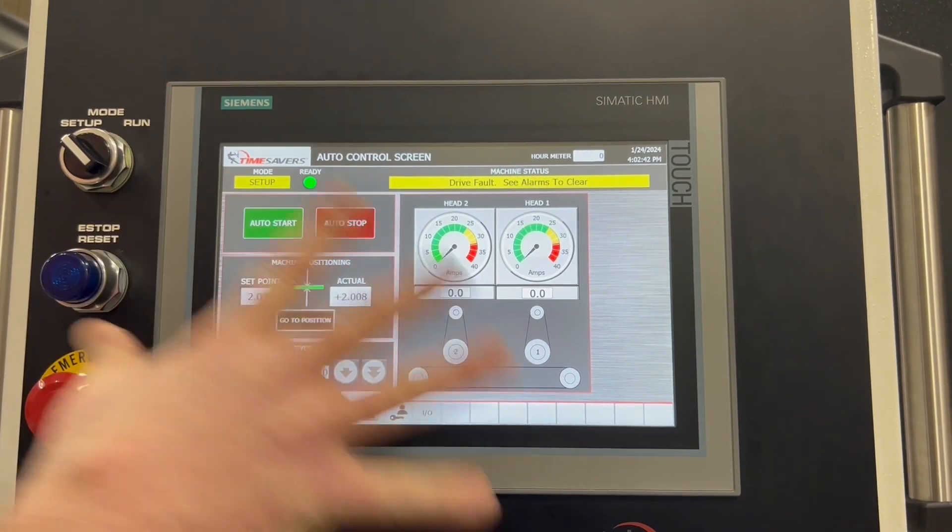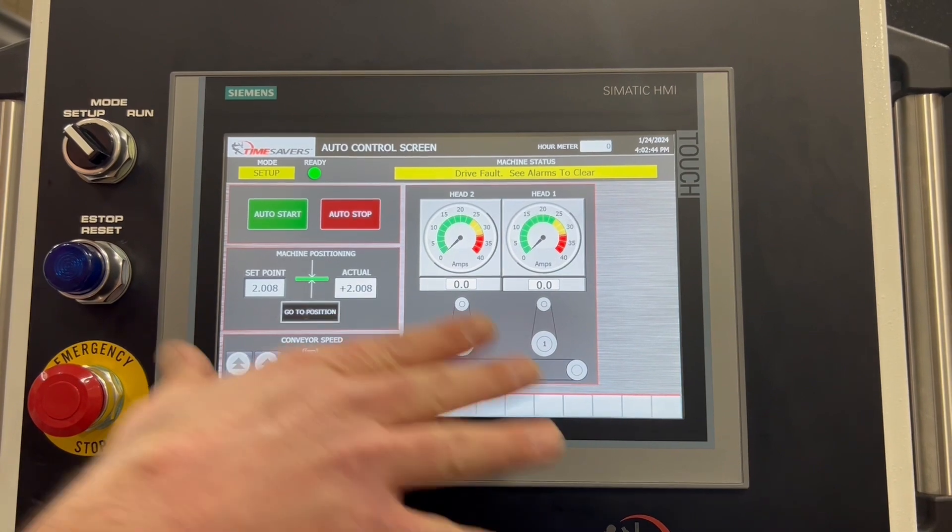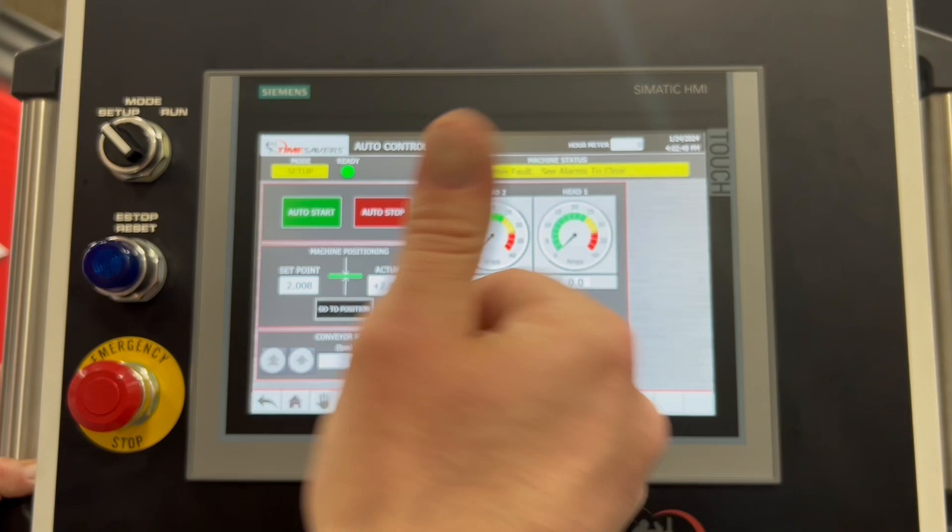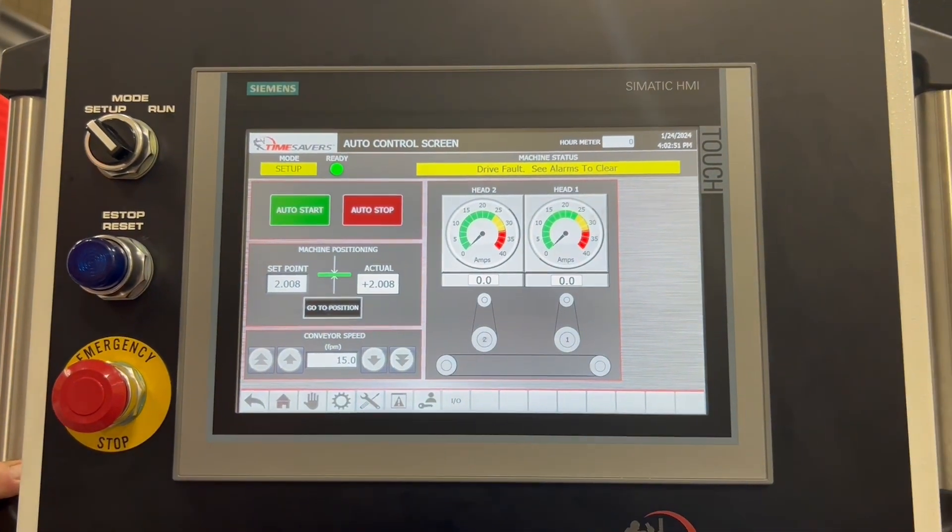Once we have the part number or recipe identified and pulled up into the system, we can go ahead and hit auto start and the machine will automatically start up depending on the recipe that is programmed in there.